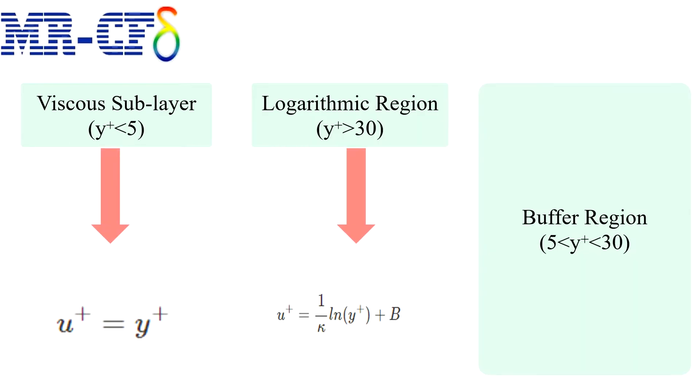The viscous sublayer: In a viscous layer, the fluid is dominated by the viscous effect so it can be assumed that the Reynolds shear stress is negligible. The linear velocity law as given by the formula here, U plus equals Y plus.